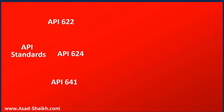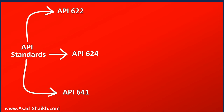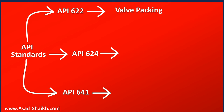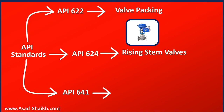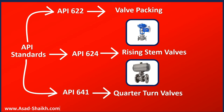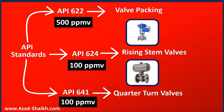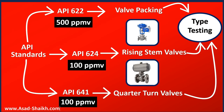The API standards are divided into three important standards used throughout the world: API 622, 624, and 641. API 622 covers the valve packing itself. API 624 covers rising stem valves — for example globe valves and gate valves. API 641 covers quarter-turn valves. The emission criteria are comparatively stricter: 100 ppmv for valves and 500 ppmv for packing. These standards will likely get even stricter in the future. Importantly, all three of these standards fall under type testing. Only for production testing do you use ISO 15848 Part 2.